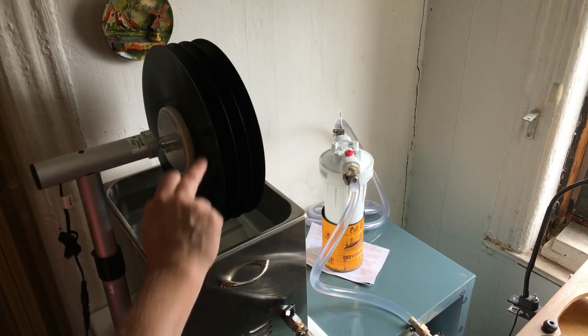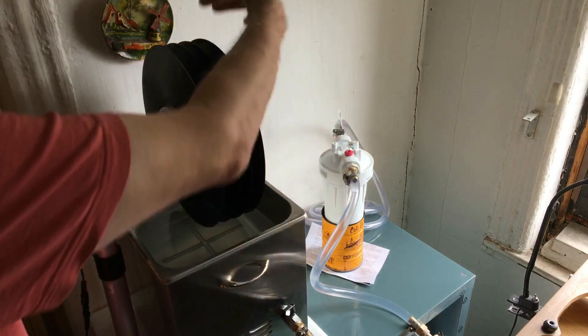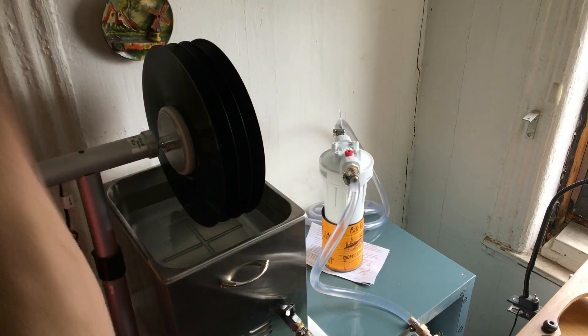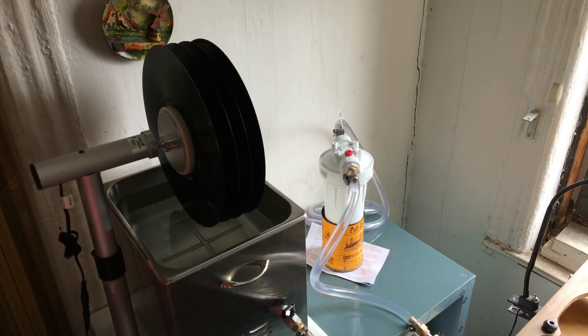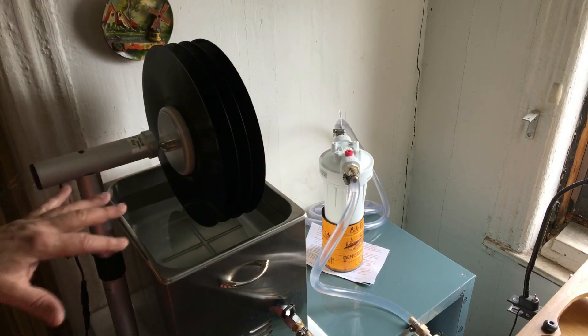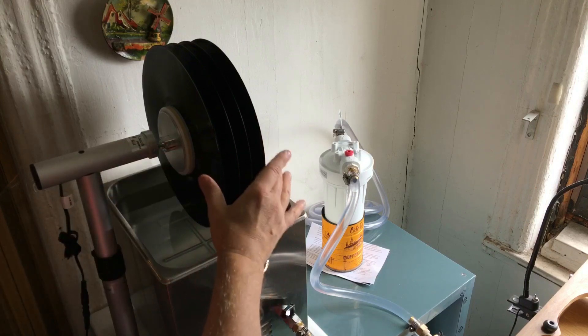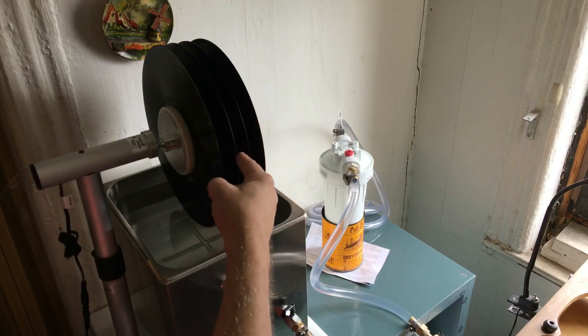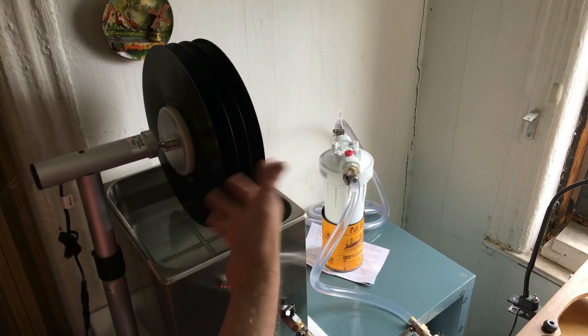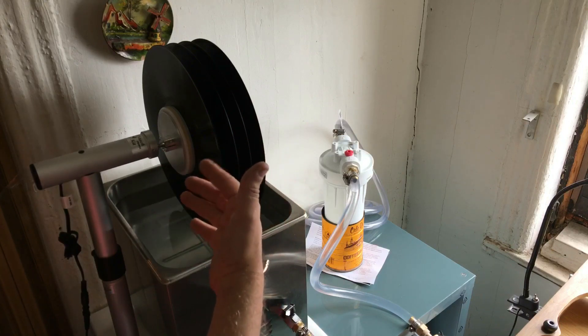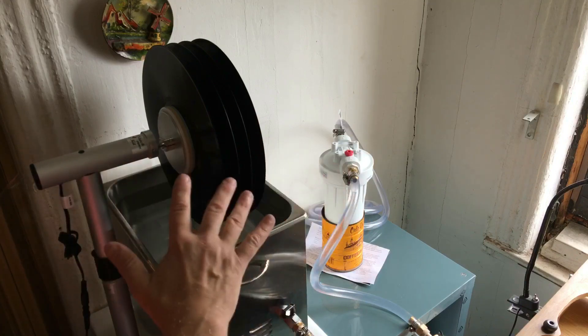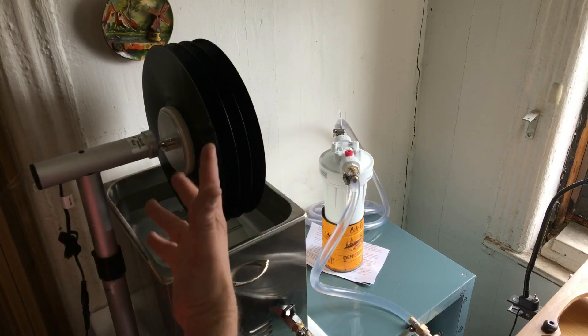They basically are dry all the way around the circumference of the record until it gets to the water line mark where there's still some water left over. But essentially I'll remove this, let it sit for a second, and then I'll do a final rinse and dry on my VPI 16.5. Again, that's what Harry Weisfeld recommends, a final rinse in just pure distilled water, nothing else. And that dries it, and then you're good to go.